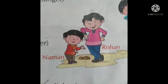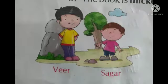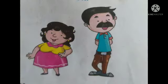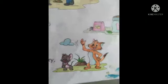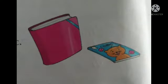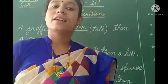Naman is smaller than Rohan. Weel is taller than Sagar. The girl is thicker than the man. Tom is bigger than Jerry. The book is thicker than the comet.